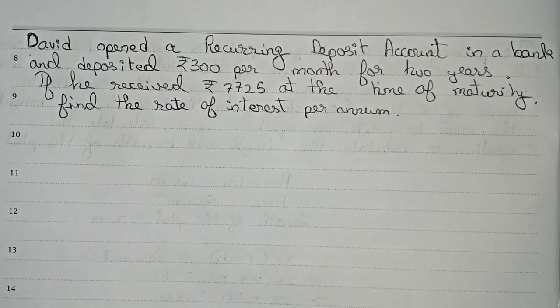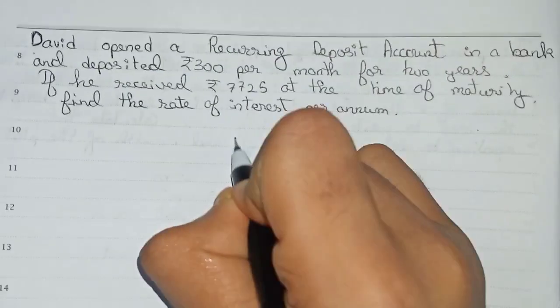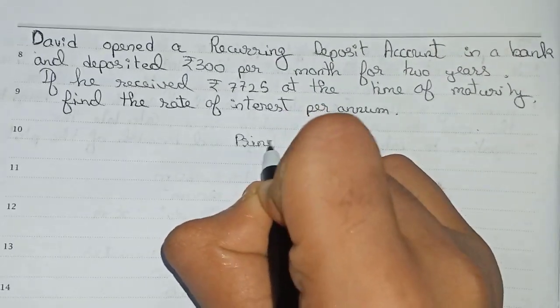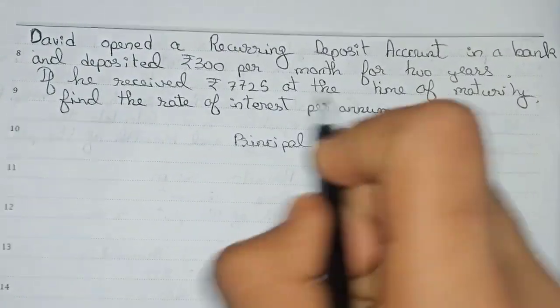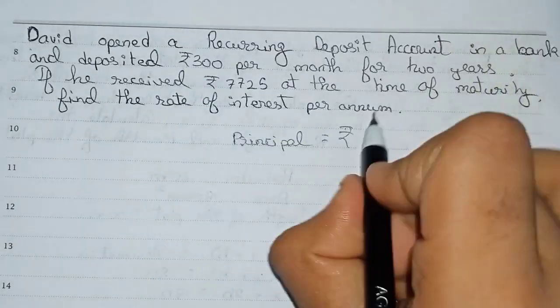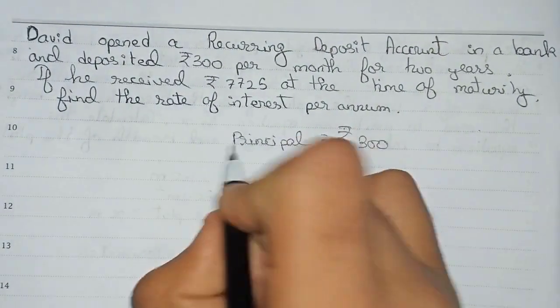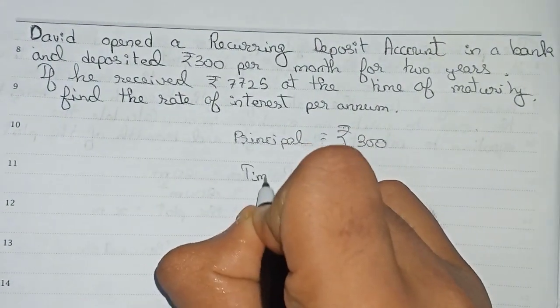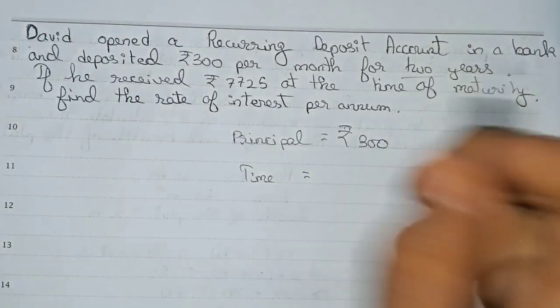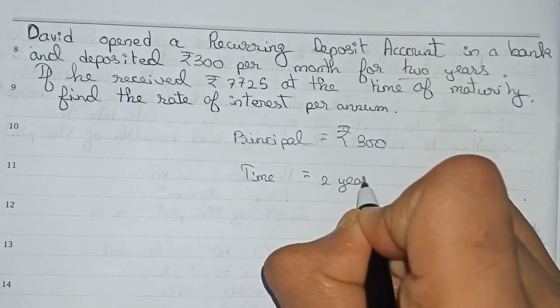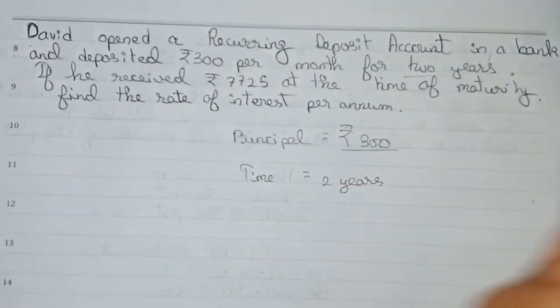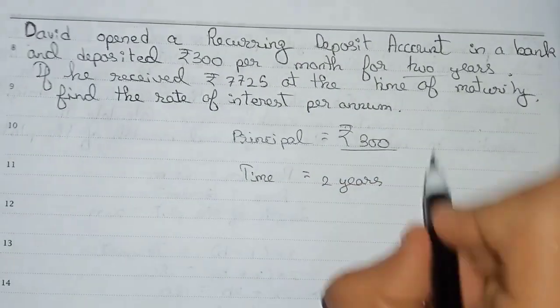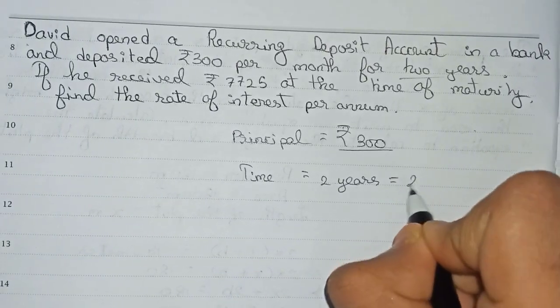So principal in the question is rupees 300. It is given per month. Now time in the question is two years. So as the principal is taken per month, this time also will convert into months.